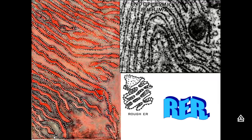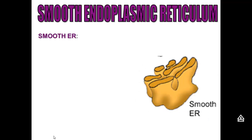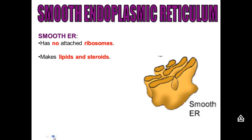Here's a picture of the rough ER — an electron micrograph picture. You can recognize it very easily because it has dots all over it; you can see the ribosomes all over it. The smooth ER has no ribosomes, and that's because it doesn't have anything to do with proteins.